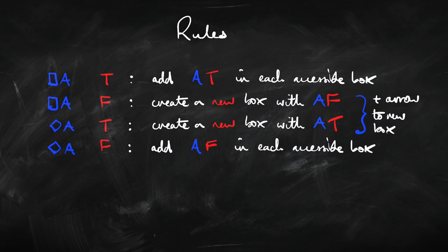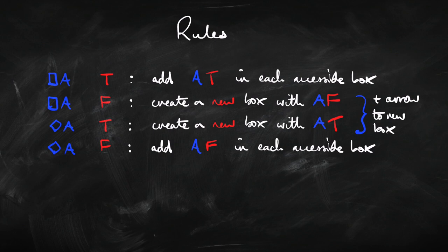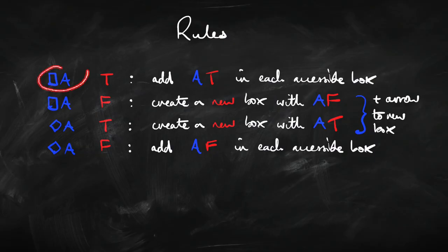What about the rules for the modalities — box and diamond? If you've got box A being true, put A being true in each of the accessible boxes — each box with an arrow going to it. If you've got box A being false, create a new box, join it with an arrow, and put A false in the new box. If you've got diamond A being true, create a new box with an arrow and put A being true in it. If you've got diamond A being false, put A false in all boxes that you've got an arrow going to. So box A true and diamond A false work similarly — doing something with all accessible boxes. Box A false and diamond A true also work similarly — creating a new box.